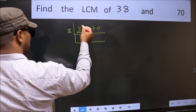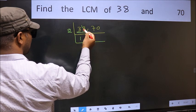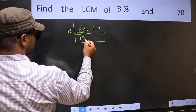3 minus 2, 1, 1 carried forward 18. When do we get 18 in 2 table? 2, 9, 18.